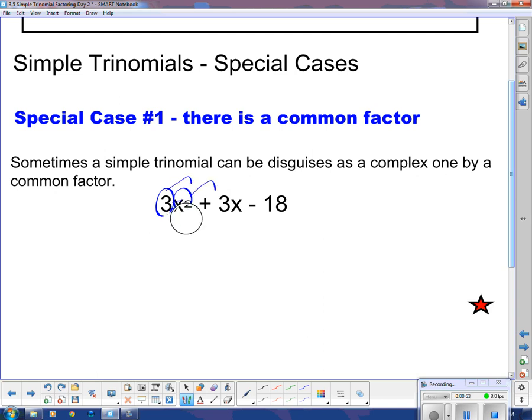The disguise here is that there is a common factor of 3. So if we take out the common factor of 3, then there will be no term in front of the x squared. When you take out a common factor, you divide each of the terms by it, we get x squared plus x minus 6.